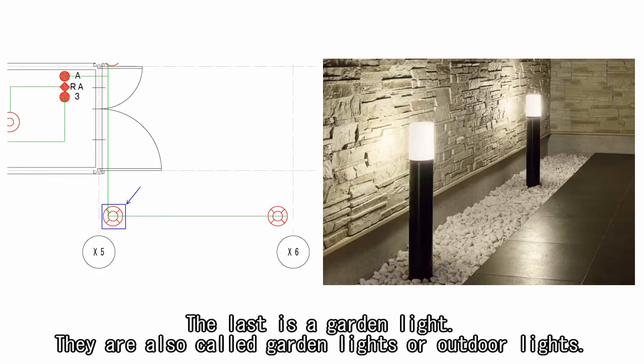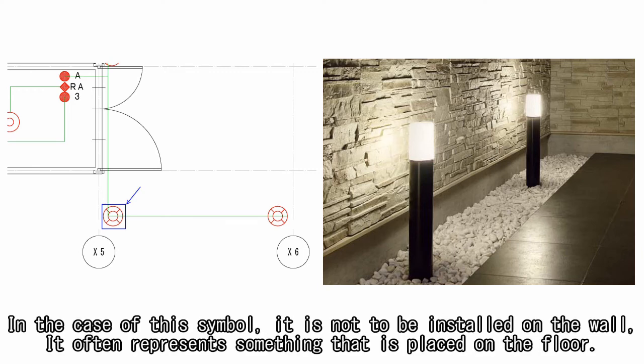The last is a garden light. They are also called garden lights or outdoor lights. In the case of this symbol, it is not to be installed on the wall, it often represents something that is placed on the floor.